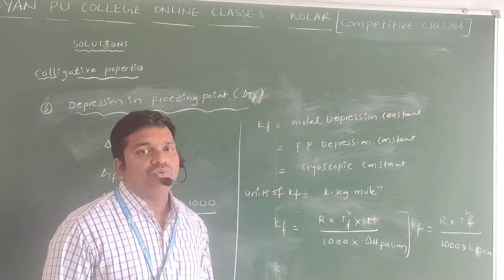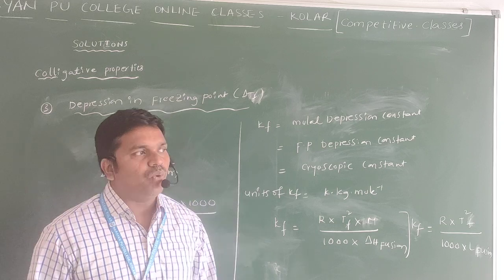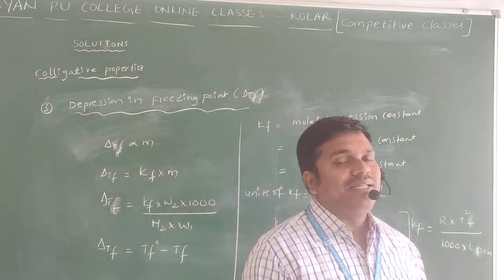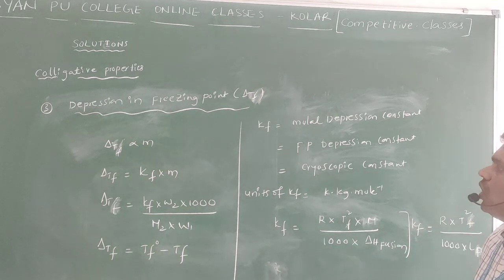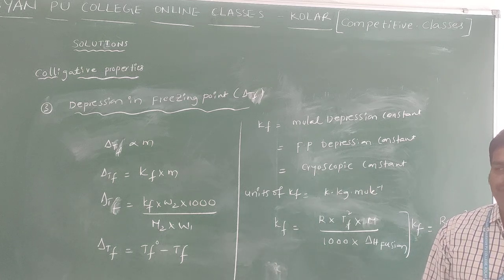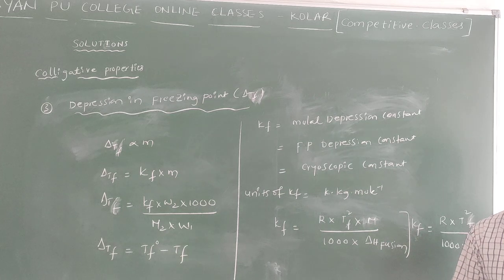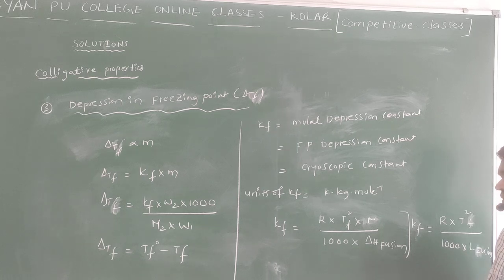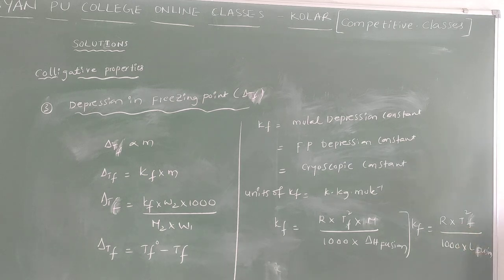Kf has different names: Molar Depression Constant, Freezing Point Depression Constant, and Cryoscopic Constant. Kf is defined as the decrease in freezing point when one mole of solute is dissolved in one kilogram of solvent. The units of Kf are the same as Kb: Kelvin kilogram per mol inverse. The formula is: Kf equals R times Tf squared times M divided by 1000 times delta H fusion. Alternatively, Kf equals R times Tf squared divided by 1000 times latent heat of fusion.